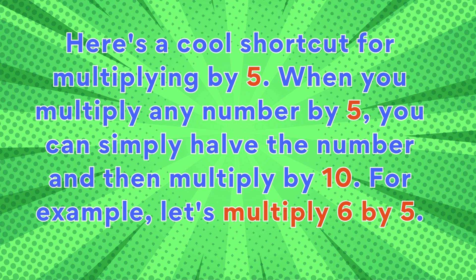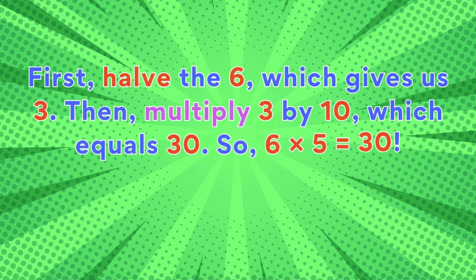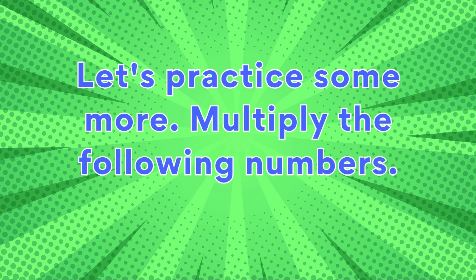you can simply halve the number and then multiply by ten. For example, let's multiply six by five. First, half of six gives us three, then multiply three by ten which equals thirty. So six times five equals thirty. Let's practice some more!